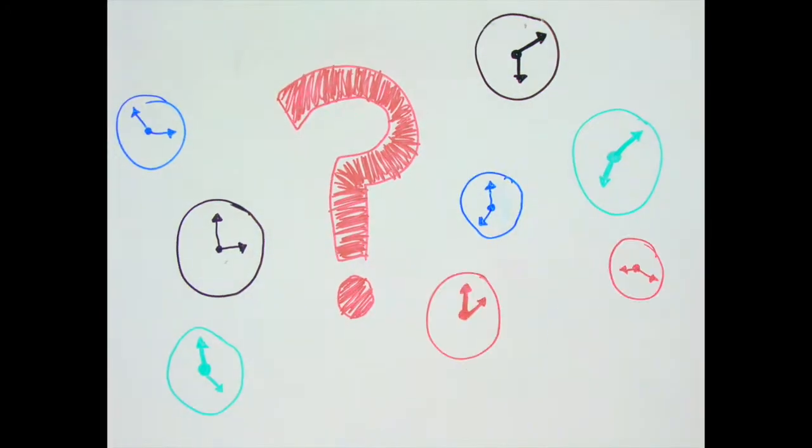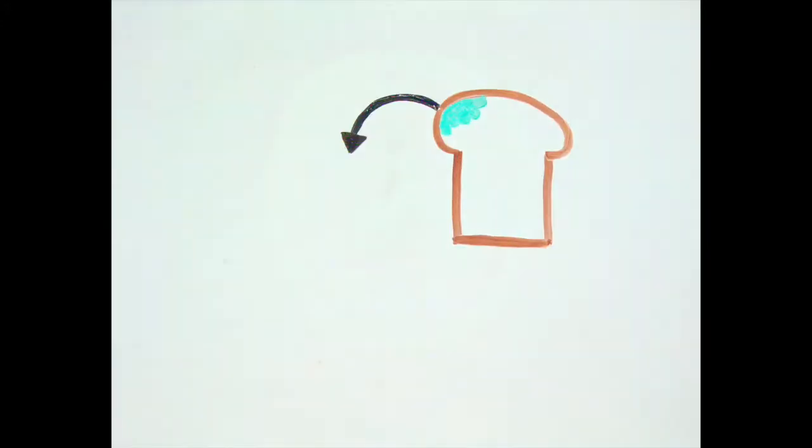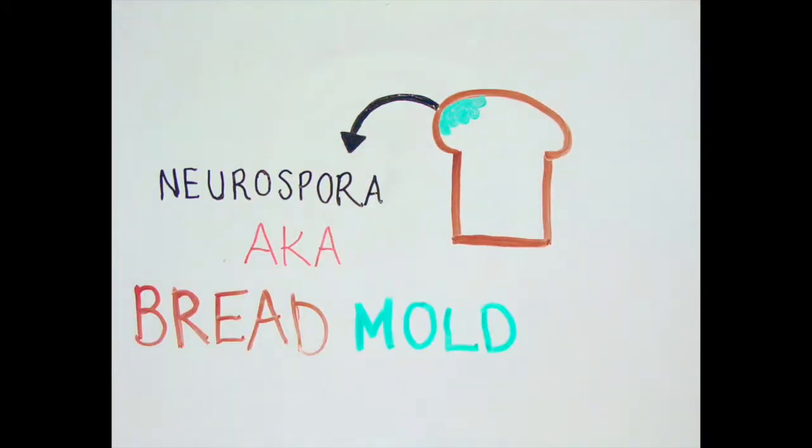Are there different clocks in every organism or could there be one universal clock? Neurospora is a great model organism used to study this.